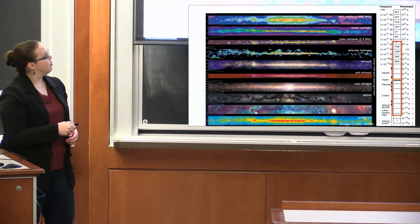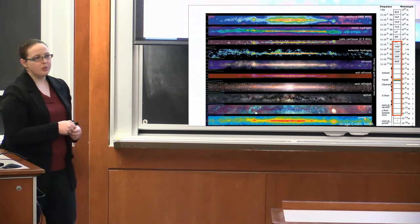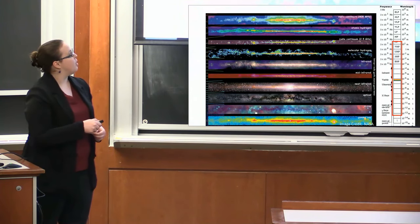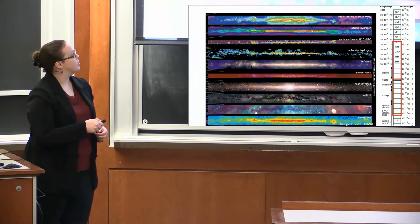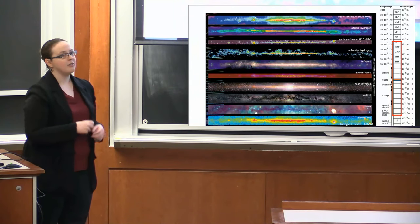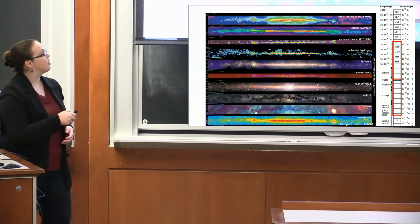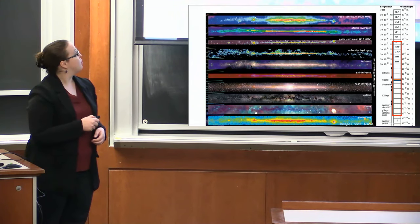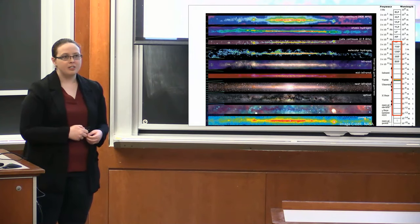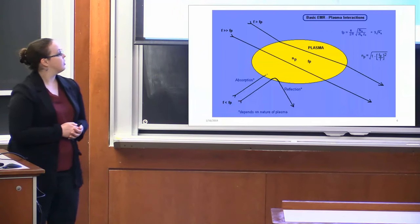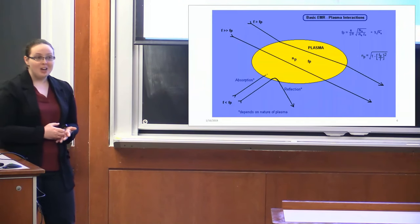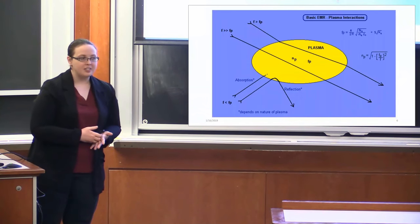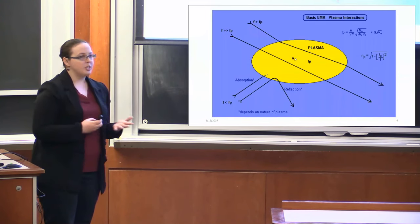But what about up here? Right? From the HF band for those of you who are hams, all the way through VLF and ELF, extreme low frequency, very long wavelengths, kilometer plus scale wavelengths, where's the picture of the galaxy there? Well, at the moment we don't have one. And the reason for that is the ionosphere. So the ionosphere is a plasma.